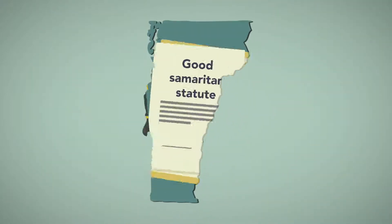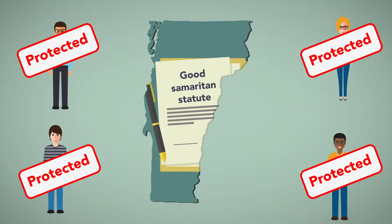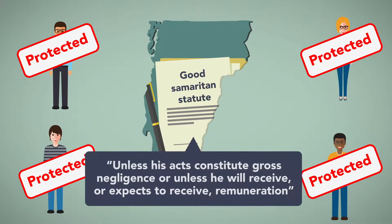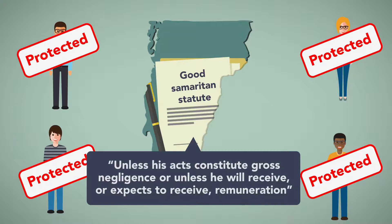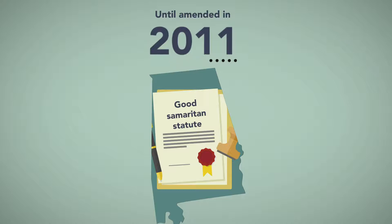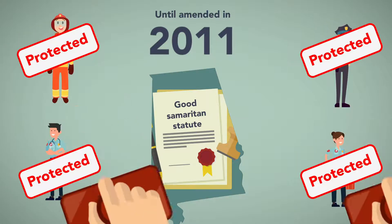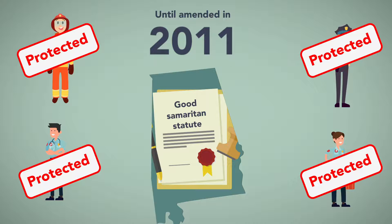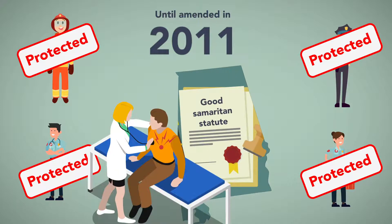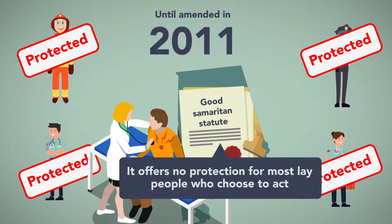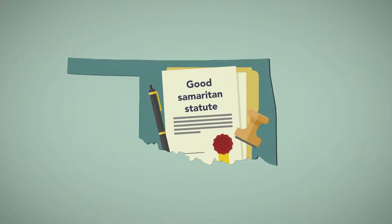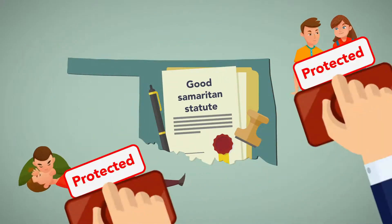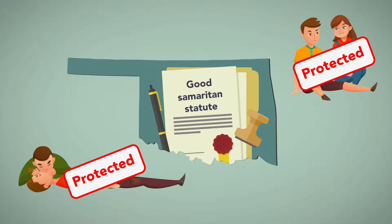Vermont's statute is one of the broadest in the country, shielding Good Samaritans from civil damages unless his acts constitute gross negligence, or unless he will receive or expects to receive remuneration. By comparison, until amended in 2011, Alabama's code only protected trained rescuers or public school system employees, except under circumstances involving cardiac arrest, offering no protection for most laypeople who choose to act. Oklahoma's Good Samaritan Act only protects unlicensed rescuers when the emergency involves CPR or bleeding.